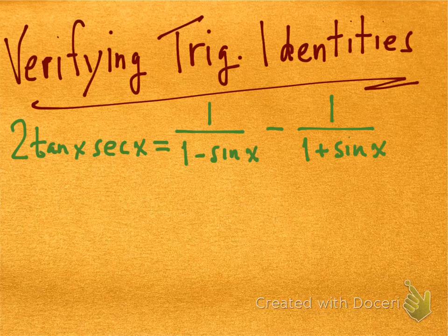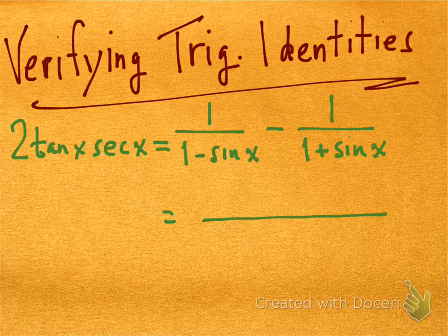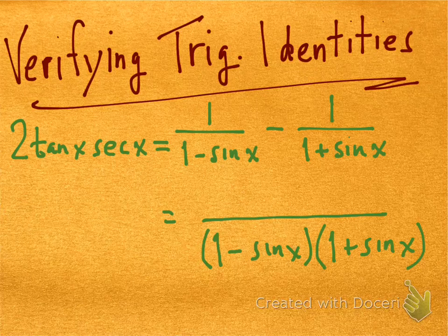So the first thing I notice is that I've got two different denominators here, (1-sin(x)) and (1+sin(x)). There's no common factors there. The common denominator for those two fractions is simply the product of those two denominators. So there's my common denominator there. It's just the product of those two smaller denominators up above. Now, what I have to do is to change the numerators so that I can combine them into one fraction here.